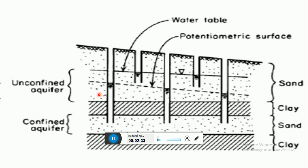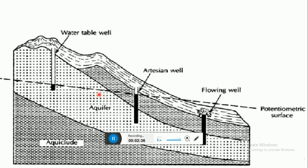Next, in this picture we will understand the artesian well and the flowing well. An artesian well is a type of well connected to a confined aquifer. A flowing well is a special type of artesian well in which water automatically flows from the mouth of the well. In the flowing well, water flows automatically, but in the case of the artesian well, water does not flow on its own. Both wells are connected to the confined aquifer.